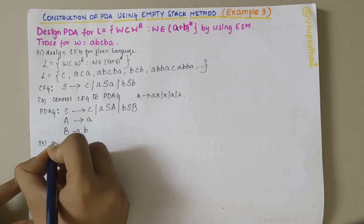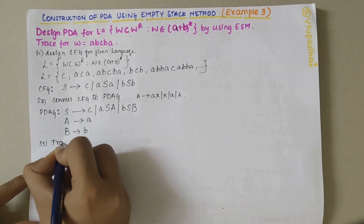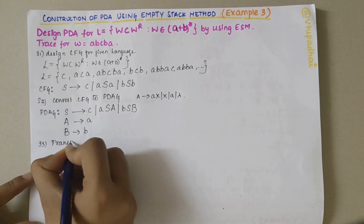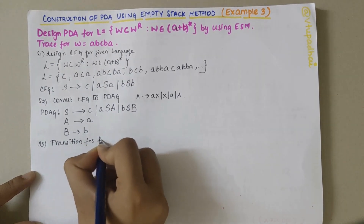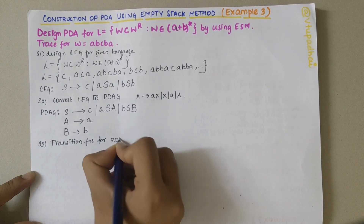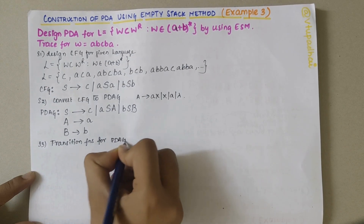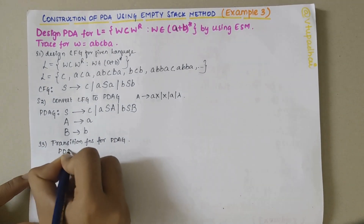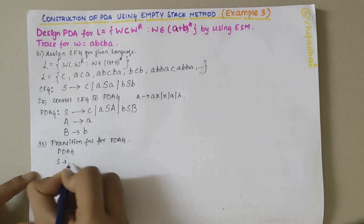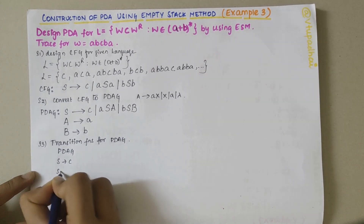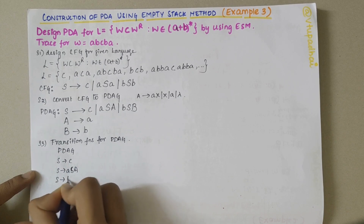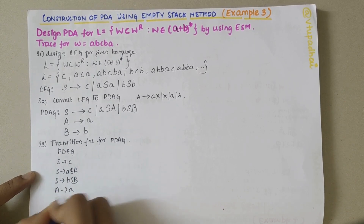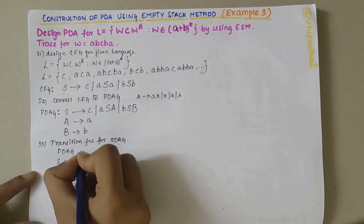My next step is to write the transition functions for the PDAG. The PDAG productions are: S → C, S → A S A (capital A), S → B S B (capital B), A → a, B → b.